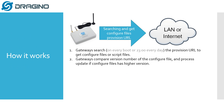Here is how this feature works. The gateway will search the URL from your local area network or internet every day at 11 PM. The gateway will search the provision URL to get the configuration files or script files, then compare the version number on your provision server and check if the server has a newer version. If so, the gateway will process the update.